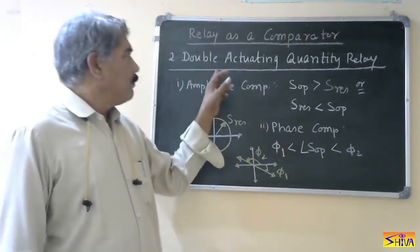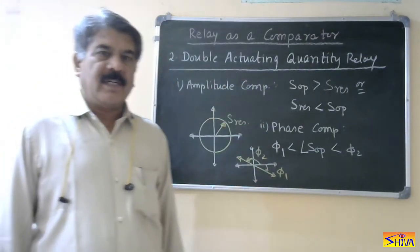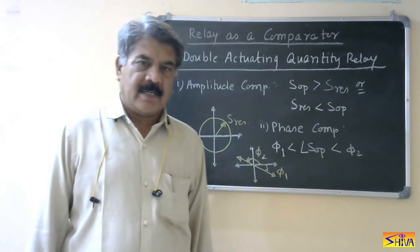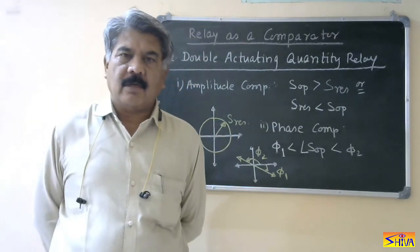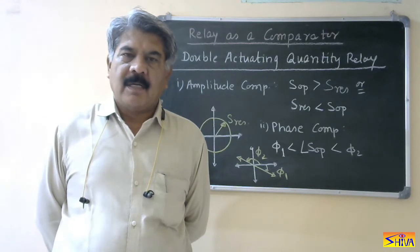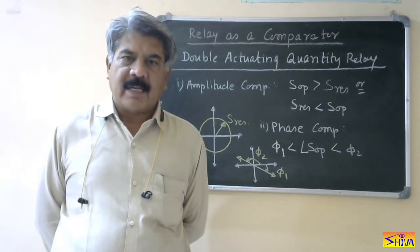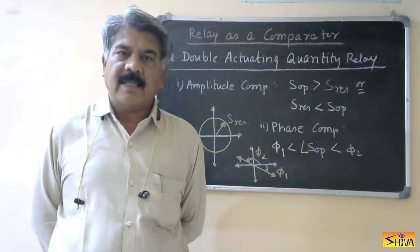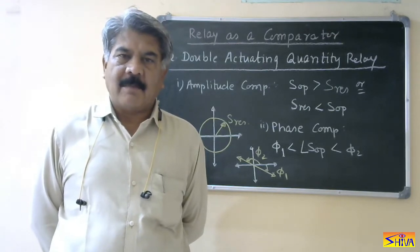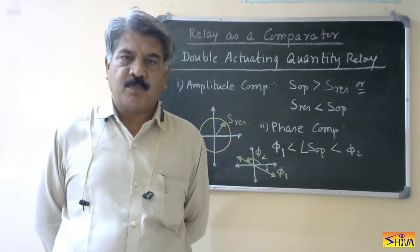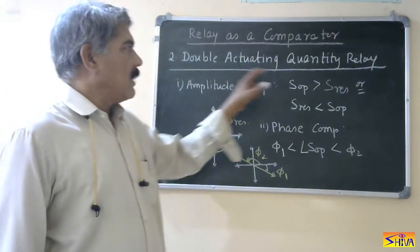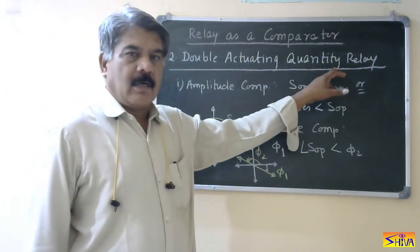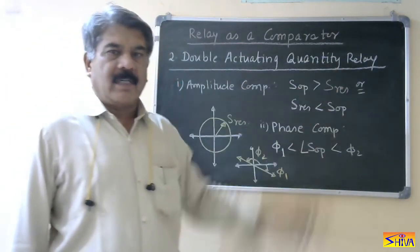The second is the double actuating quantity comparator. The drawbacks of the previous single actuating quantity comparator were: it does not provide the directional feature, and as it is a single actuating quantity comparator, it is less reliable — reliability is poor. Both these drawbacks are overcome by this double actuating quantity relay or double actuating quantity comparator.